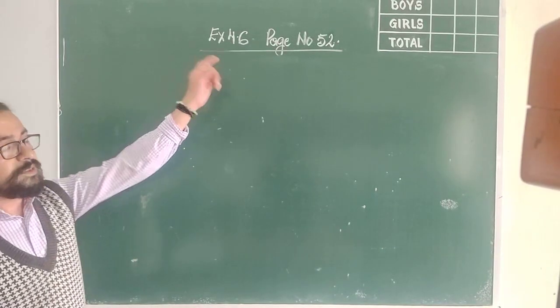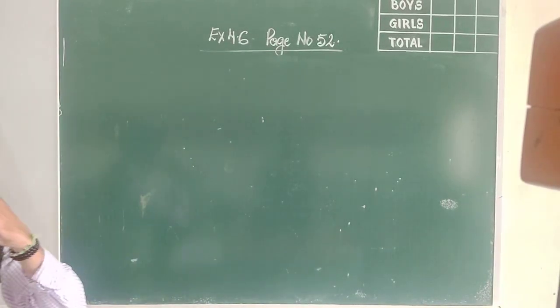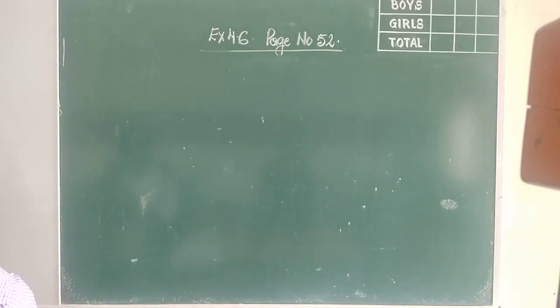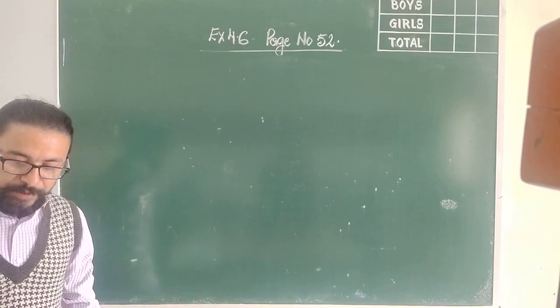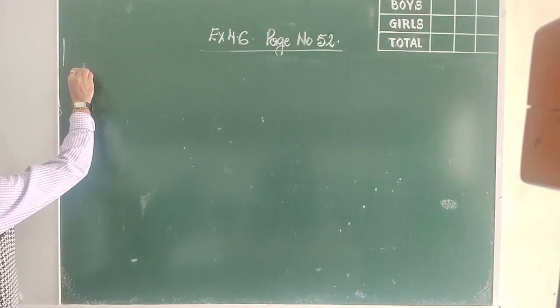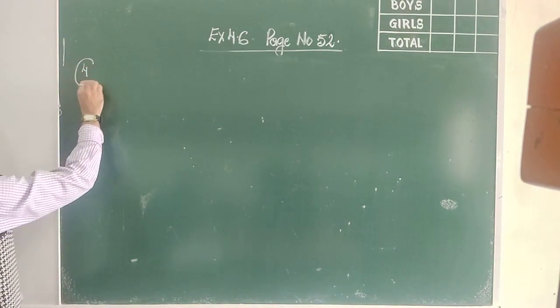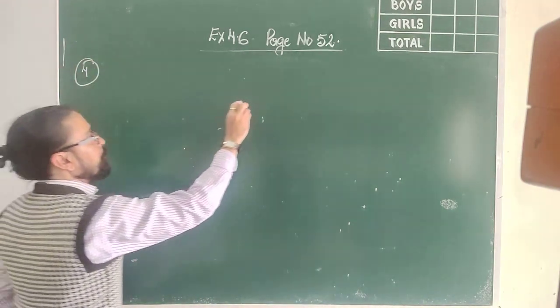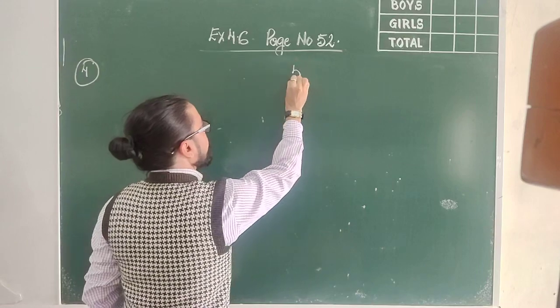We are doing Exercise 4.6, on page number 42. We are doing just two more sums for today — sum number 4 and sum number 5.